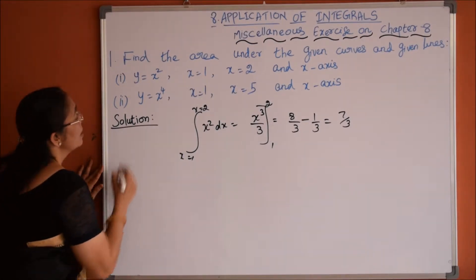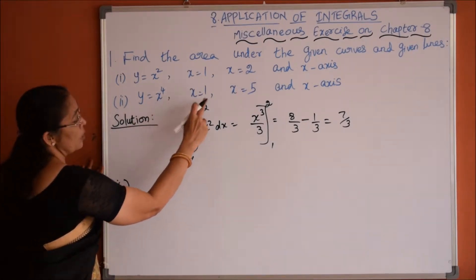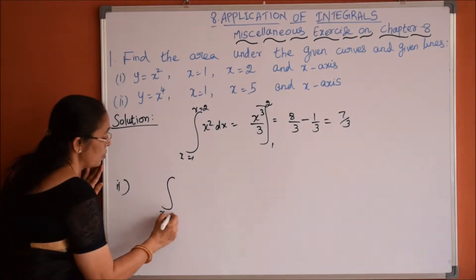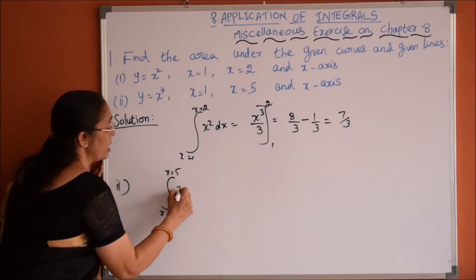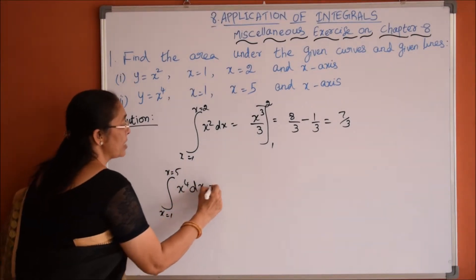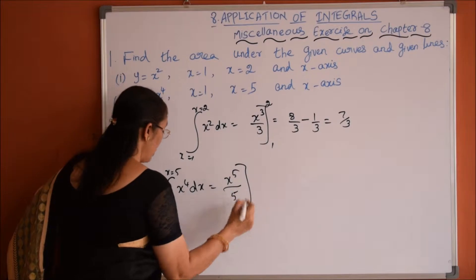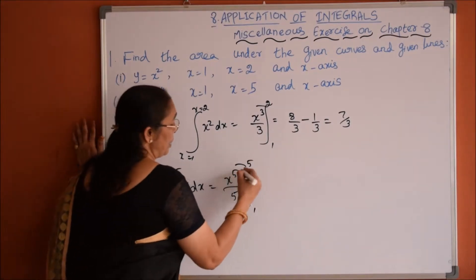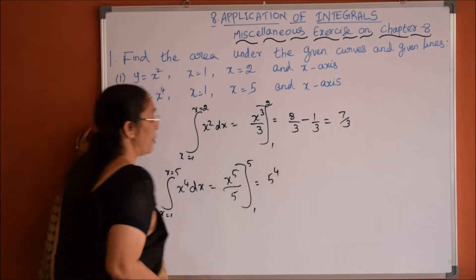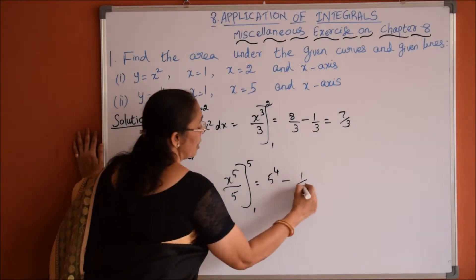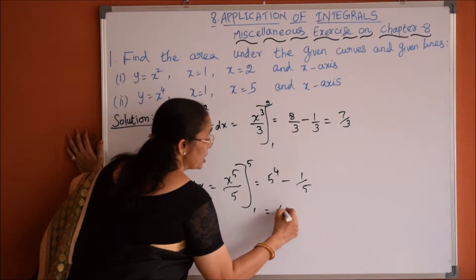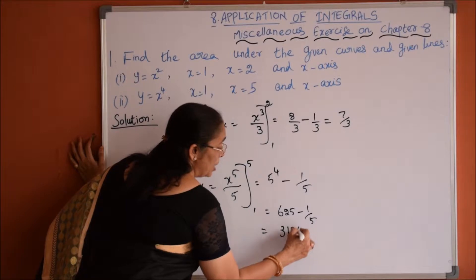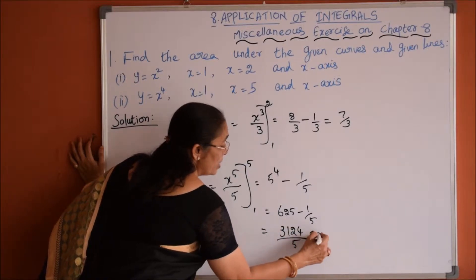Second problem: y is equal to x power 4, x is equal to 1 and x is equal to 5 and the x-axis. This is integration from x=1 to x=5 of x to the power 4 dx, which is x power 5 by 5 with limits from 1 to 5. So it gives 5 to the power of 5 divided by 5, the 5 cancels, giving 5 to the power 4 minus 1 by 5. Since 5 power 4 is 625, the answer is 3124 divided by 5 square units.